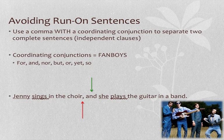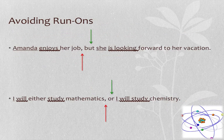Avoiding run-ons makes your sentences much more clear. For example, 'Amanda enjoys her job, but she is looking forward to her vacation' — complete sentence on each side, so we need the comma and the conjunction. Another example: 'I will either study mathematics, or I will study chemistry.' Even though 'I' is stated in both halves, it is a restatement and counts as a new sentence. We need both the comma and the conjunction. The biggest issue students have is putting only the comma or only the conjunction — we need both.